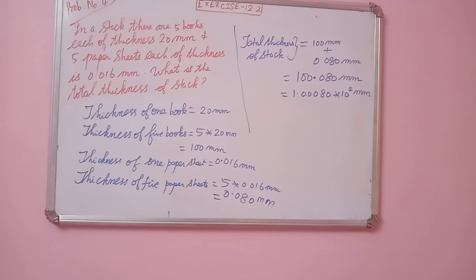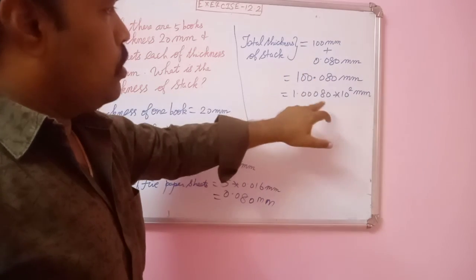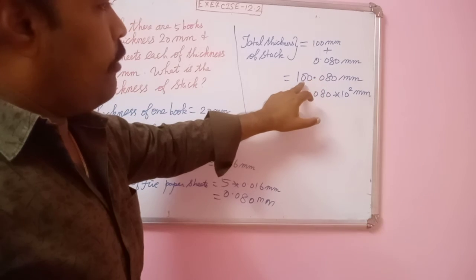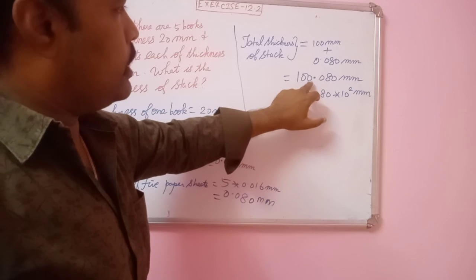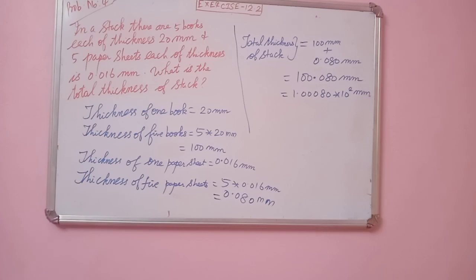That's all about this problem. That is, here, 100 plus 0.080 equals 100.080. So, this decimal, if we are moving here, it will become 10 power 1, 10 power 2. So, 1.080 into 10 power 2. That's all. Thank you.